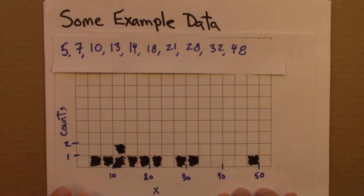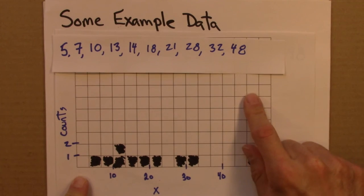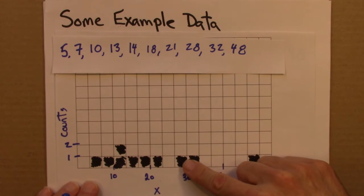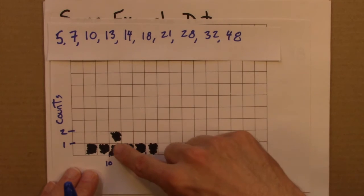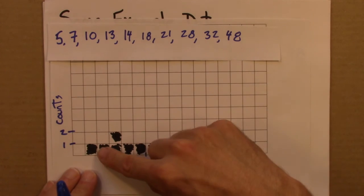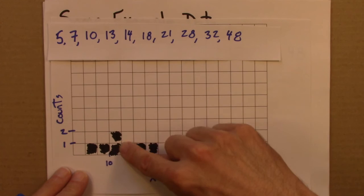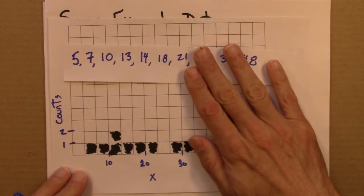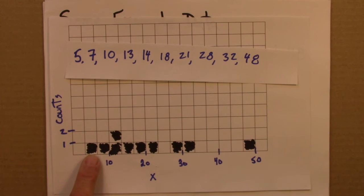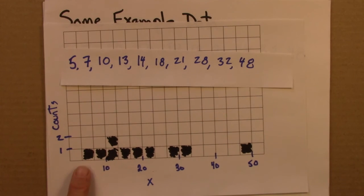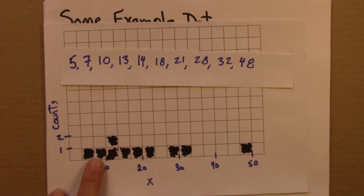But before we go to cumulative distribution functions, I realize there's one more thing I wanted to mention about the histogram. So we can think of a histogram as measuring in terms of counts, but we could also turn this into a probability by dividing by the number of data points. So we have 10 measurements, and so I could interpret this as saying there's one value between 3 and 1/3 and 6 and 2/3.